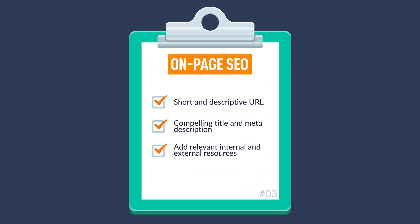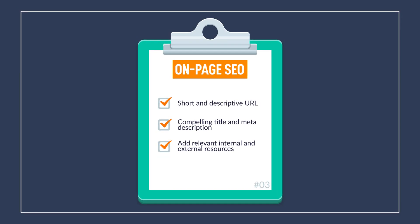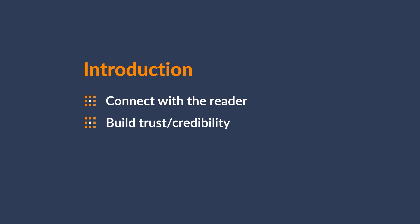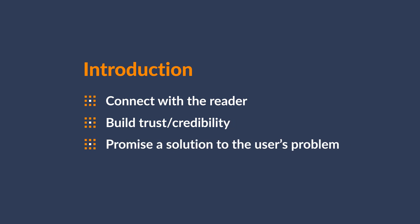And that about does it for the on-page SEO checklist section. Take a screenshot and let's move on to the next section, which is all about content. Choosing a topic with high search traffic potential and doing basic on-page SEO is important, but all of your efforts will be in vain if your content isn't up to par. Here are a few things you can add to your to-do list when creating content. The first thing is to write an engaging introduction — the purpose of the intro is to let your readers know they're in the right place and that your page will solve the reason for them being there. Start with something that resonates with the reader, build trust or credibility, and promise a solution to the user's problem.